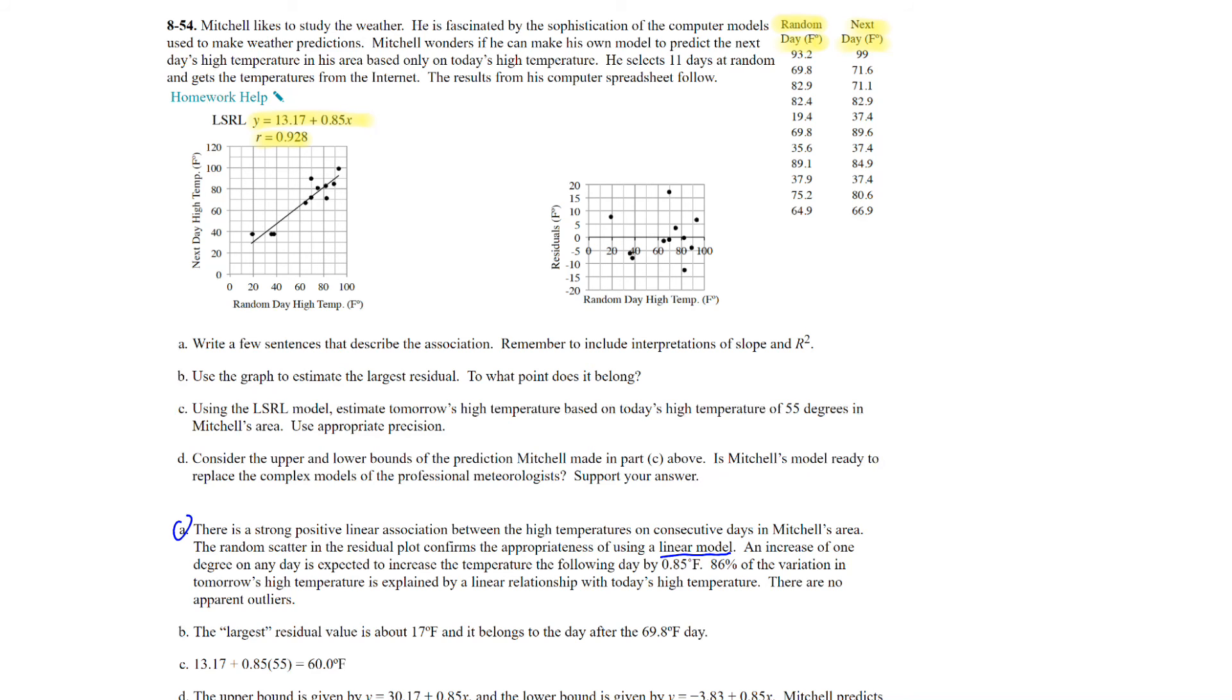An increase of one degree on any day is expected to increase the temperature the following day by 0.85 degrees Fahrenheit. That's your slope. So that's paying attention to the slope and talking about the change of y over the change of x. 86% of the variation in tomorrow's high temperature is explained by linear relationship with today's high temperature. And there are apparently no outliers. And remember the 86% that comes from your r squared value. So that was approximately 0.86, rounded to 86%.